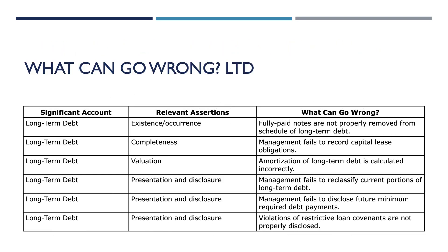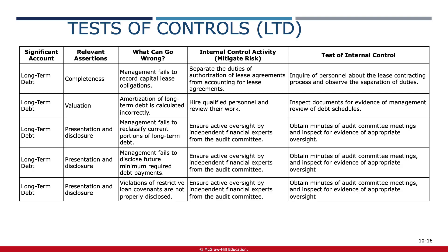The existence of long-term debt and its accurate valuation can be challenging, especially if there are complex debt structures or intricate terms in the debt agreements. Ensuring compliance with debt covenants may be challenging, especially if there are uncertainties about the financial health of the entity. Long-term debt may also not be completely recorded, or there could be omissions of certain debt-related transactions from the financial statements. Key internal controls include authorization and approval controls, ensuring a well-defined process for authorizing and approving new long-term debt issuances or modifications to existing debt agreements, involving individuals with the appropriate level of authority.